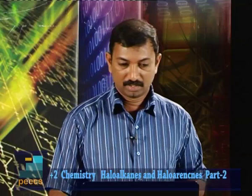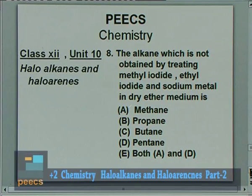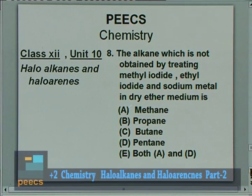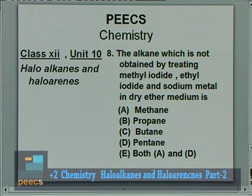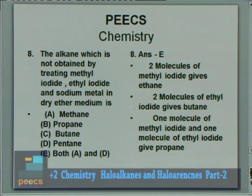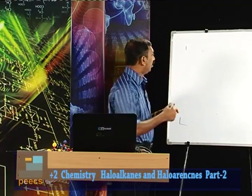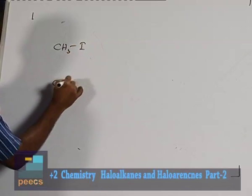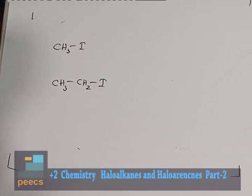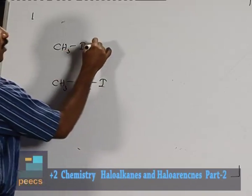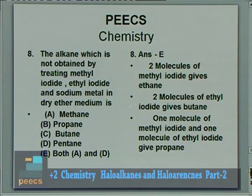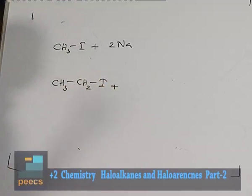Question 8: The alkane which is NOT obtained by treating methyl iodide and ethyl iodide together with sodium in dry ether — options are methane, propane, butane, pentane, and both A and D. The correct answer is E (both methane and pentane are not obtained). Two molecules of methyl iodide with Na give ethane; two molecules of ethyl iodide with Na give butane; one methyl iodide and one ethyl iodide with Na give propane. Methane and pentane cannot be formed — the carbon atoms double in the Wurtz reaction.